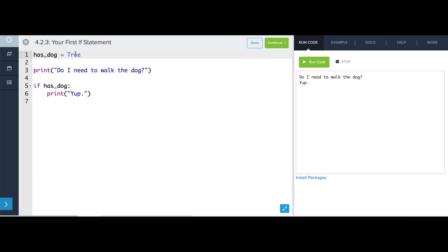Now if I change this to false and run this, now it just says do I need to walk the dog, and it's left there as an unanswered question, which is a little weird.